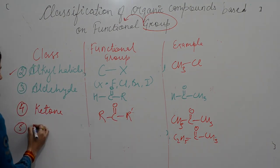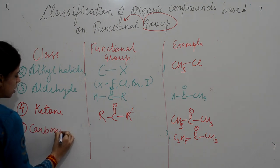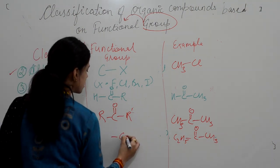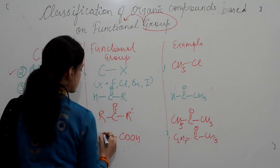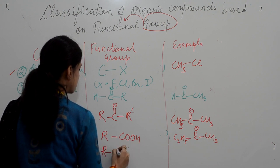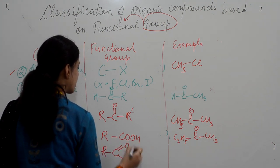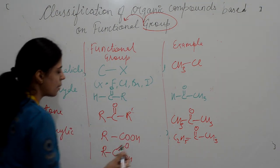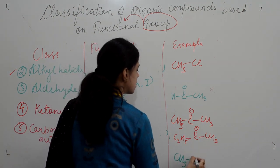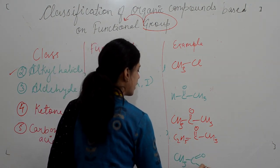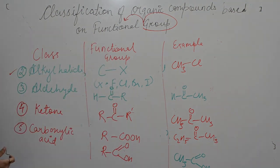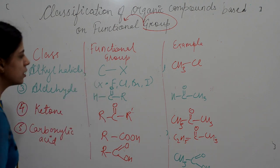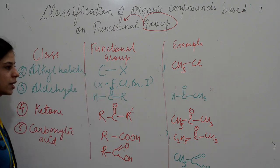Next is carboxylic acid. In carboxylic acid, the functional group COOH is present, attached to the alkyl chain. It is written as C=O with an OH group — the carbon is attached to oxygen and a hydroxyl group. The example is CH3-C(=O)-OH. The important thing to focus on is the class and its functional group, which will become clearer when we discuss nomenclature.